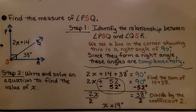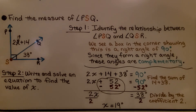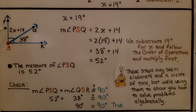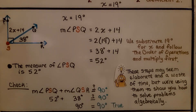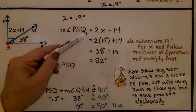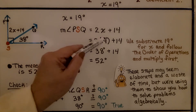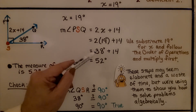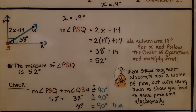But x equals 19 degrees is not the final answer to the problem. We need to find 2x plus 14. Since x is 19 degrees, the measure of angle PSQ equals 2x plus 14. We substitute 19 degrees for x and follow order of operations — multiply first: 2 times 19 degrees is 38 degrees. We add 14 to get 52 degrees. So the measure of angle PSQ is 52 degrees.